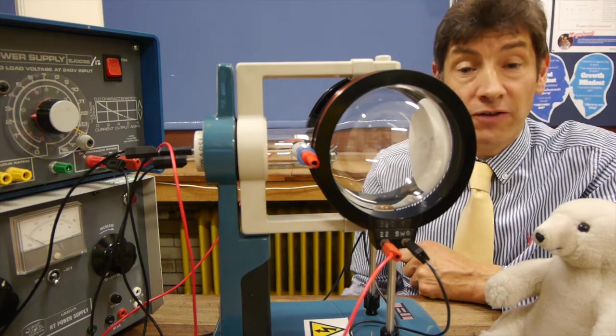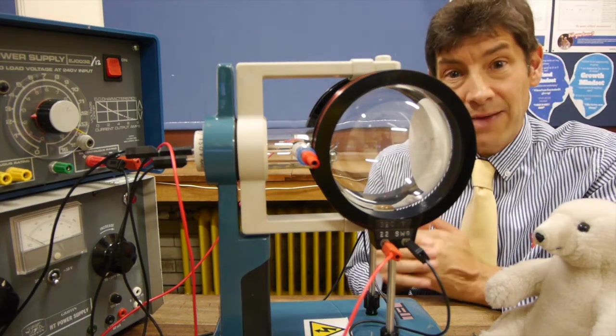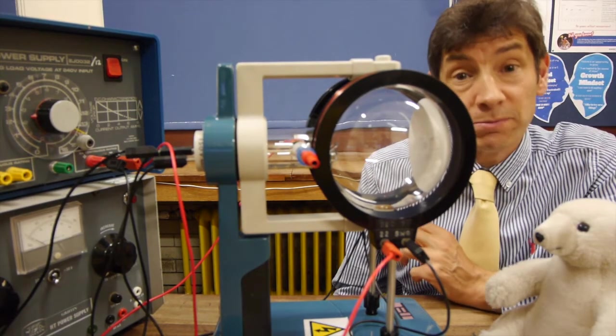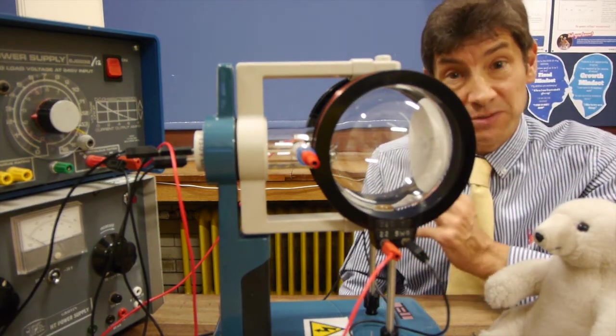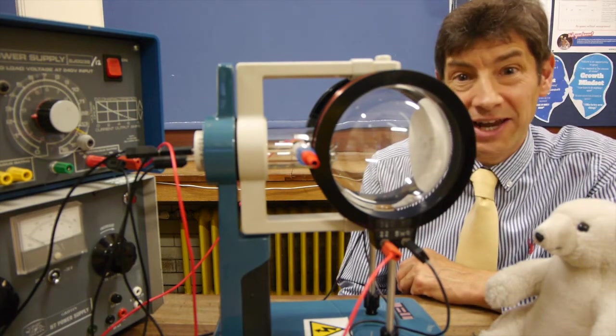Now, it's the magnetic field that forces them into a circle, so if the centripetal force is mv squared over r, that must be caused by the magnetic field, which is b, e, v, or b, q, v, if it's not electrons.